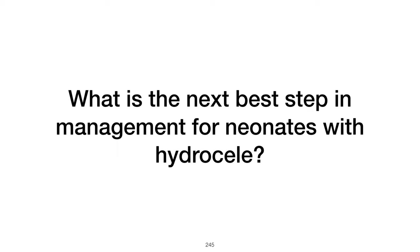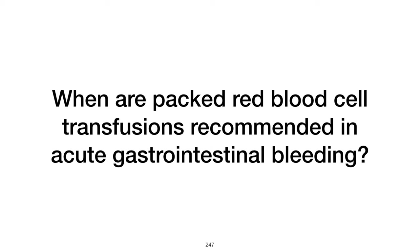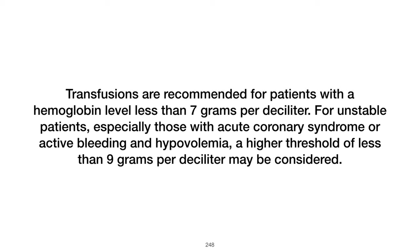What is the next best step in management for neonates with hydrocele? For neonates with hydrocele, the next best step is reassurance and observation, as most hydroceles — both communicating and non-communicating — tend to resolve spontaneously by age one year. Packed red blood cell transfusions are recommended in acute gastrointestinal bleeding for patients with hemoglobin levels below 7 g/dL, with a higher threshold of below 9 g/dL for unstable patients with acute coronary syndrome or active bleeding and hypovolemia.